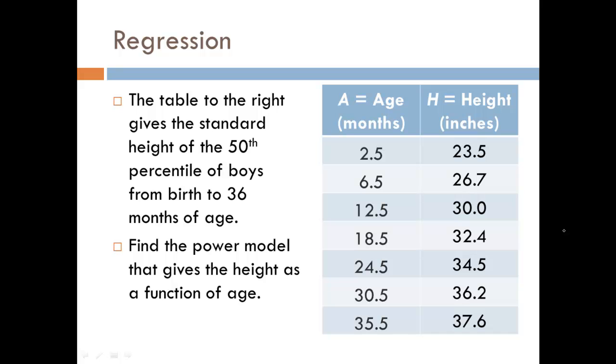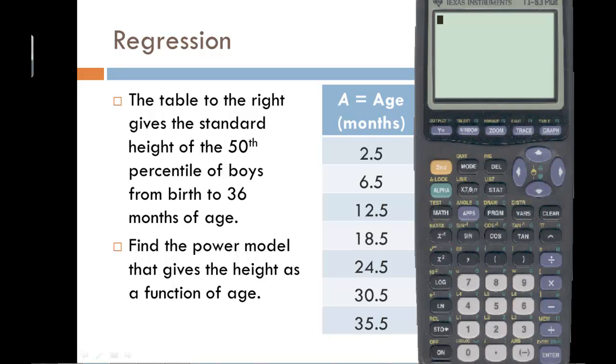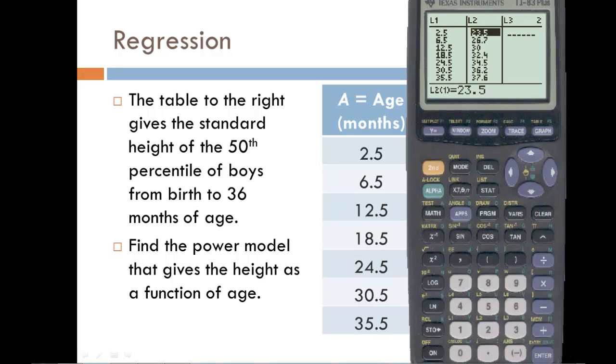So what we want to be able to do is find a power model that gives the height as a function of the age, and we can do this using our calculator. So the first thing we need to do is go into the stat menu and go into the edit mode, and we need to type into list one and list two columns the data. I've already entered all the data in so I can go ahead and exit or quit out of the stat menu.